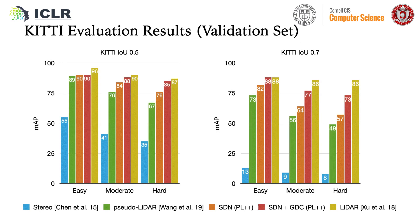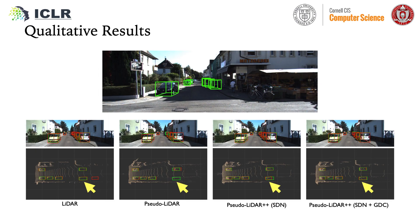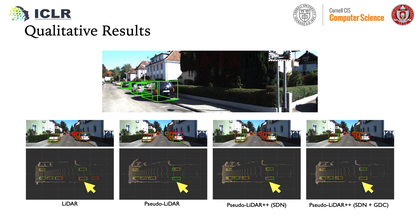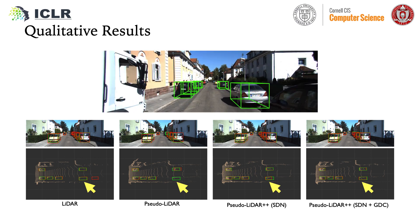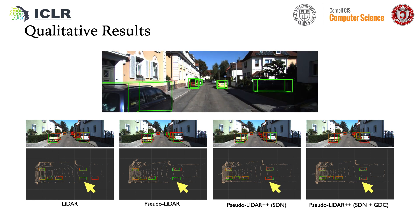We evaluate our methods on the KITTI dataset. We simulate the 4-bin LIDAR from 64-bin LIDAR, but limiting the vertical view angle. Combined with the 4-bin LIDAR, Sudolidar can achieve near-LIDAR performance on some metrics. We provide qualitative visualization of our methods. It can be seen that they can significantly improve the detection quality, especially on faraway objects.